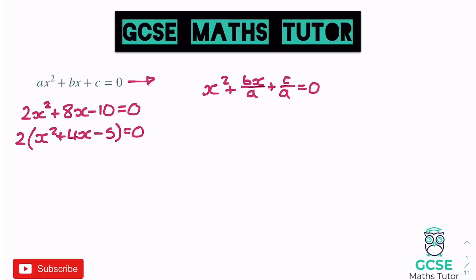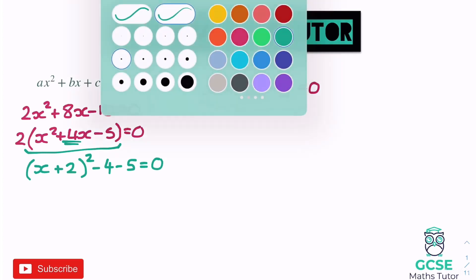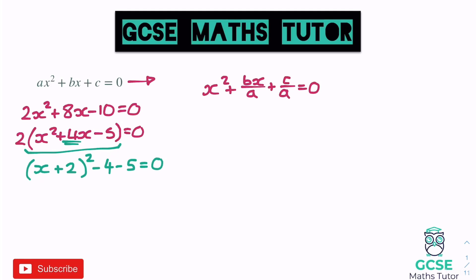The next step when completing the square is to complete the square for what's inside the bracket. On the numerical example, completing the square: we get rid of the x squared, halve the coefficient of x to get +2, put that in a squared bracket — (x+2)² — which expands to give x² + 4x but creates +4, so we subtract that 4 away. Then we have the minus 5, giving (x+2)² − 4 − 5 = 0.